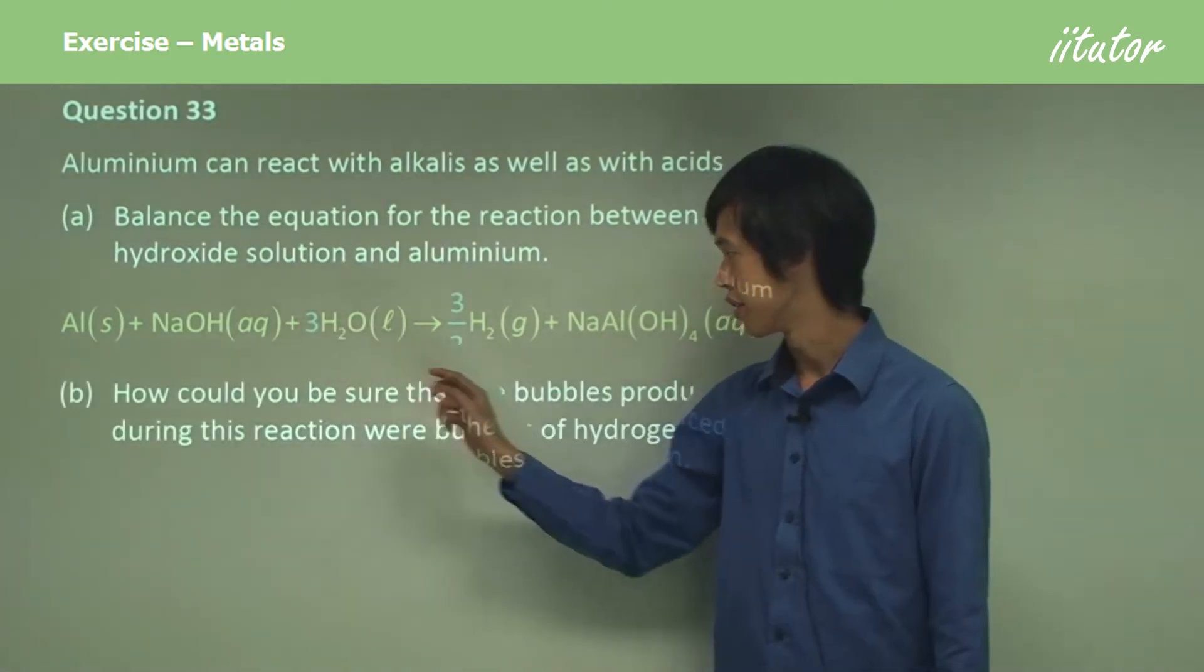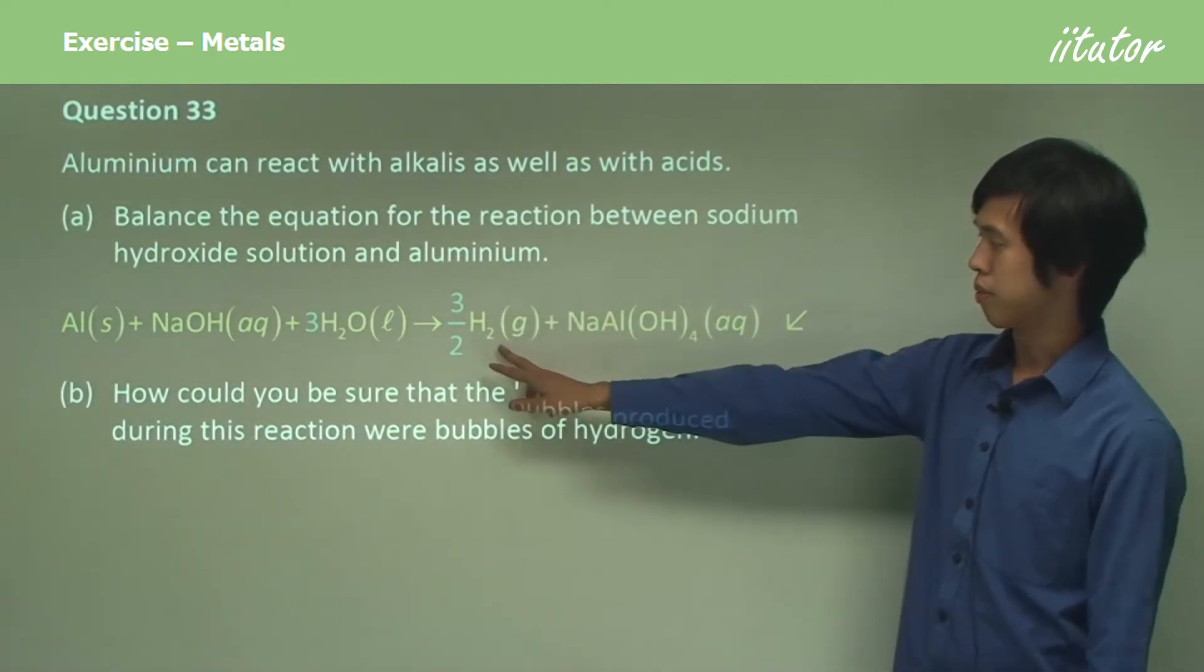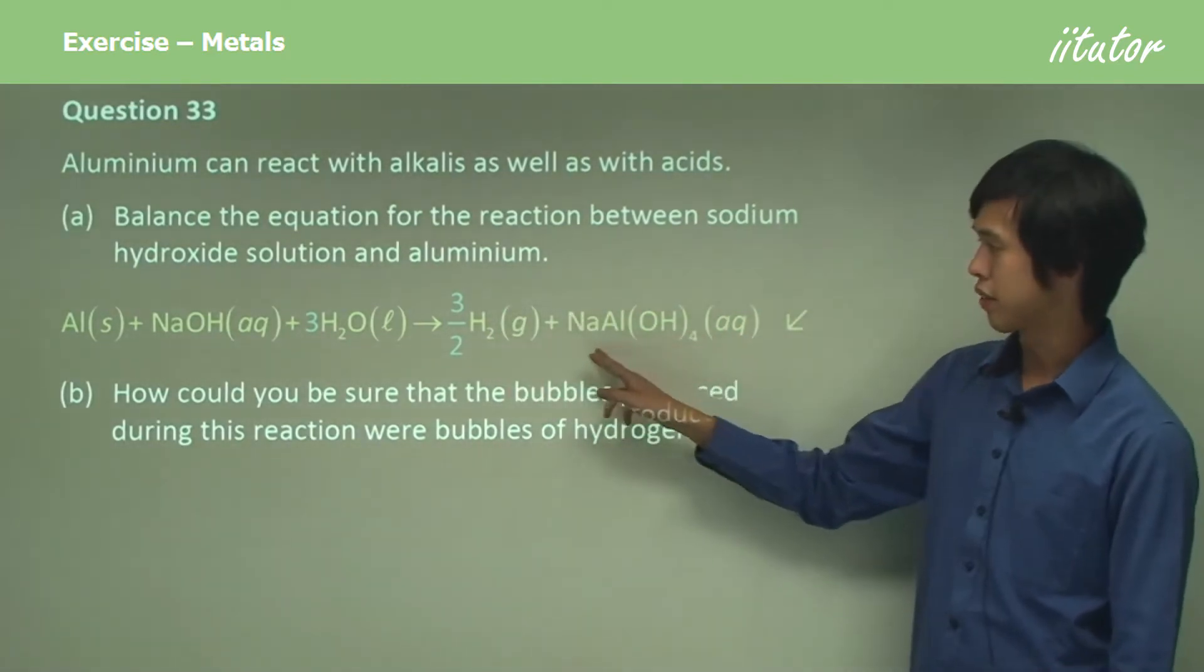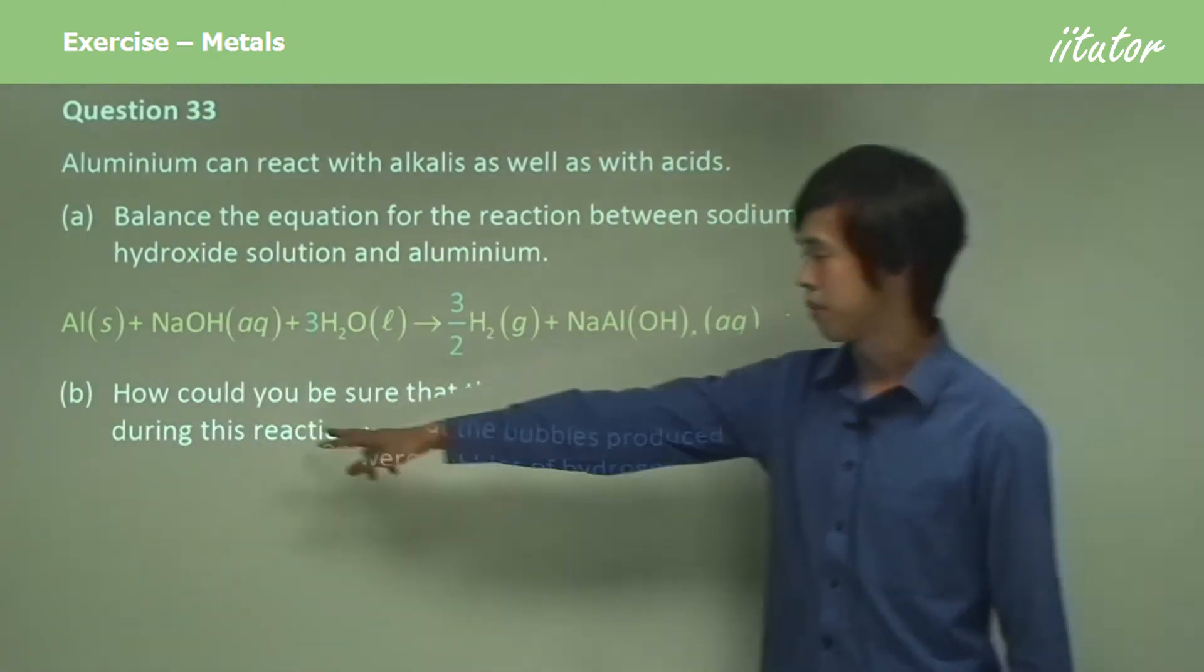We have it by three because we also need to account for the hydrogen gas. Basically we are balancing first for sodium - that's fine. Then aluminium - that's fine again.